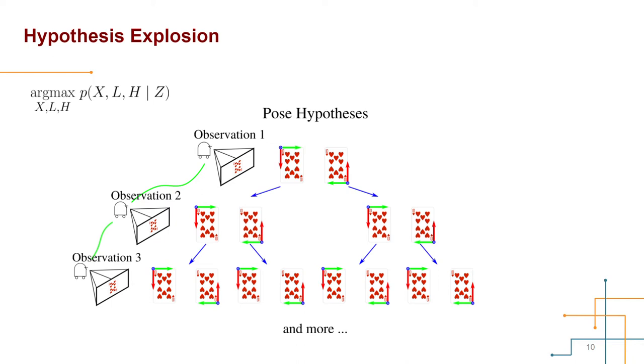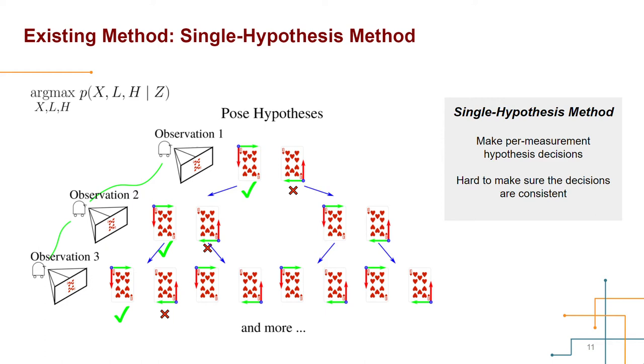But there are many existing methods in the literature to tackle it. For example, a natural solution is to reduce it to a unimodal problem by selecting the most likely hypothesis for each ambiguous measurement. We refer to this method as single-hypothesis method. It can fail quietly because it's hard to make sure the hypothesis decisions are consistent.